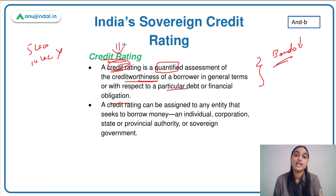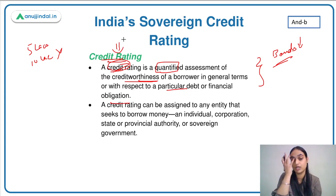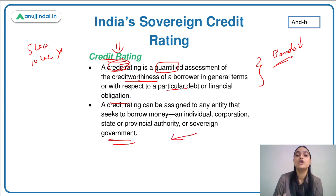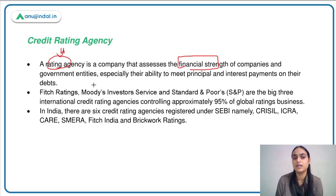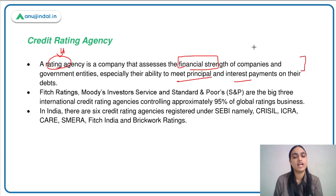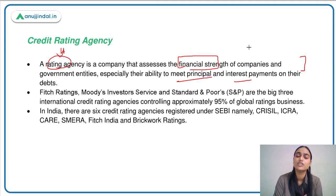Based on that rating, you can decide whether a firm is worth investing in. The credit rating can be assigned to an individual, corporation, state, provincial authority, or sovereign government. When this rating is given to a particular country, we call it a sovereign credit rating. There are certain credit rating agencies that assess the financial strength of companies and government entities, their ability to meet interest and principal payments on debts, and provide a rating based on the environment in which they are operating.